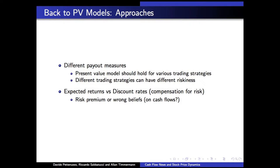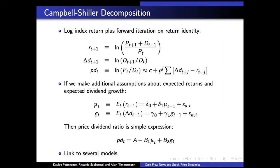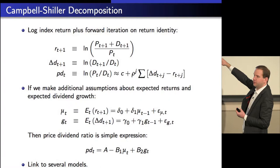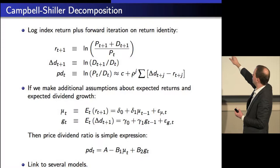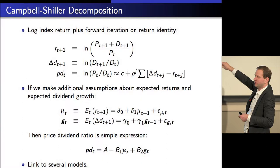So what did Campbell-Shiller say in their famous paper? They said: take log returns, take log dividend growth, then log linearize, iterate forward. You see that you don't even need an expectation operator on that price-dividend equation — it's just a mathematical equivalence. If you iterate returns forward, then you get this expression. Of course, you can take expectations on both sides at the information set at time t, and then we get the usual expectation representation. That's also fine.